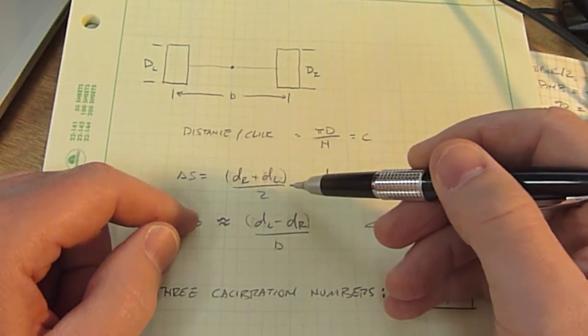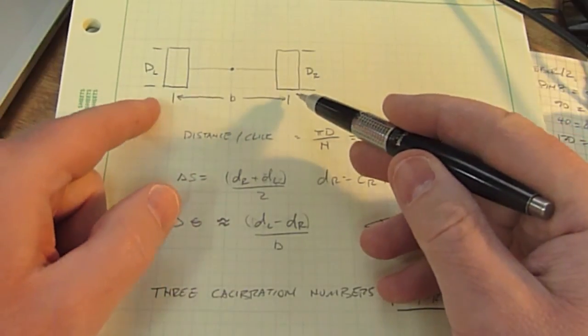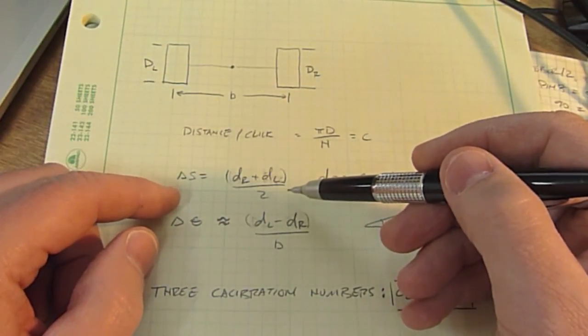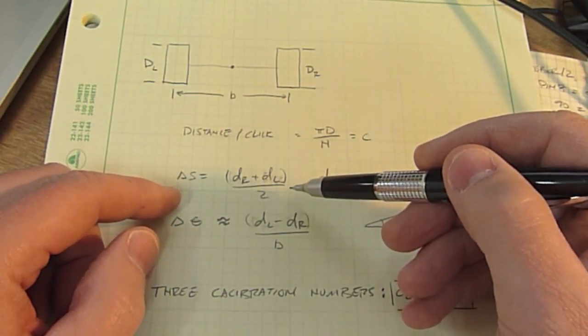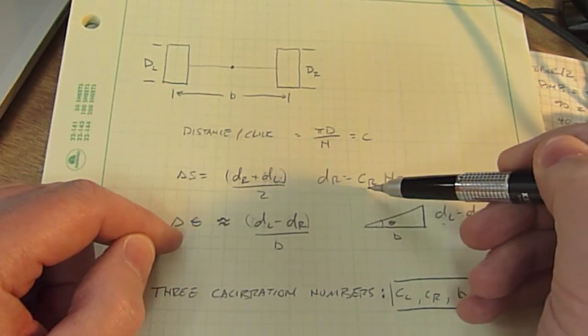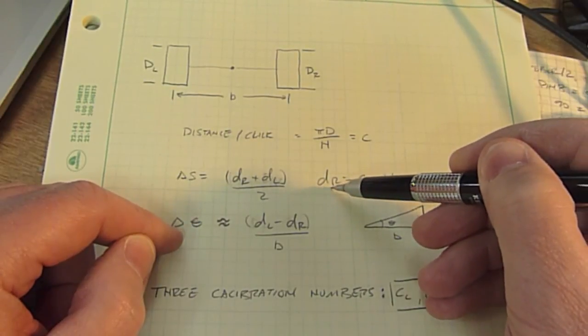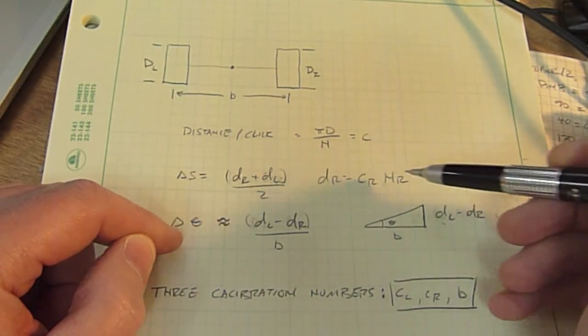In a robot, what you do is let an interrupt routine keep track of the number of clicks from the right and left encoders. Then periodically you'll look at those values. If you take the number of clicks from the right wheel and multiply it by the calibration factor for the right wheel, you get the distance that the right wheel traveled. The left equation is exactly the same.